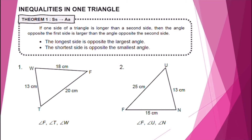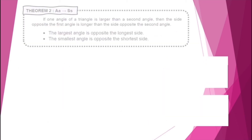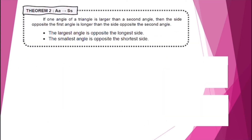Let's proceed to Theorem 2. If one angle of a triangle is larger than the second angle, then the side opposite the first angle is longer than the side opposite the second angle. The largest angle is opposite the longest side, while the smallest angle is opposite the shortest side.